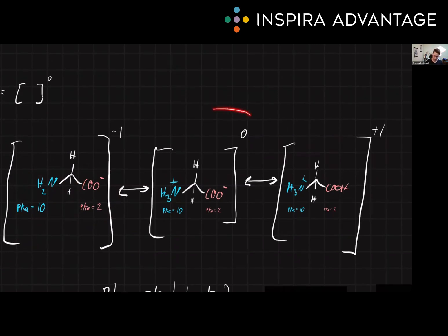But at the isoelectric point, we said that the amino acid has a net charge of zero. And as you can see, the positively charged amino group is balancing with the negatively charged carboxyl group. So while there is charge within the molecule, the net charge evens out to be zero. Plus one minus one equals zero.